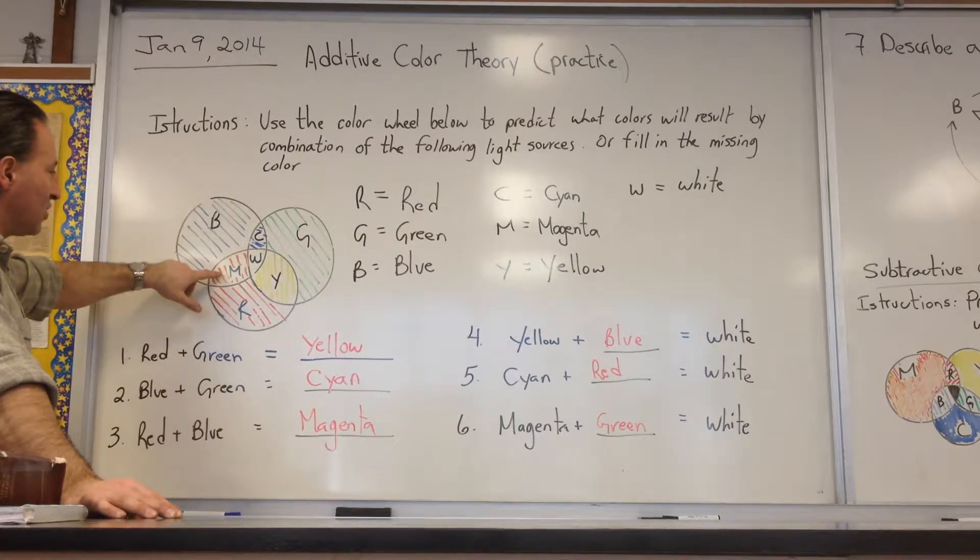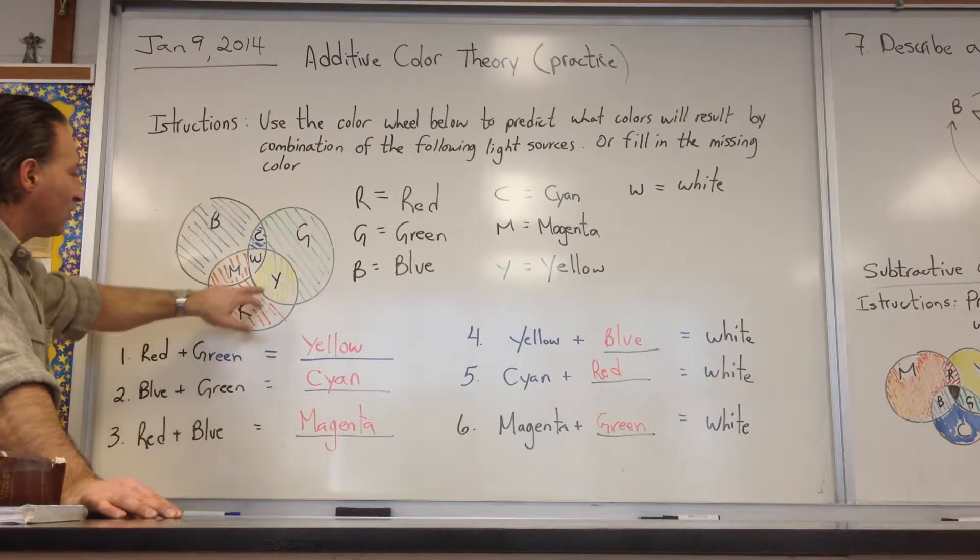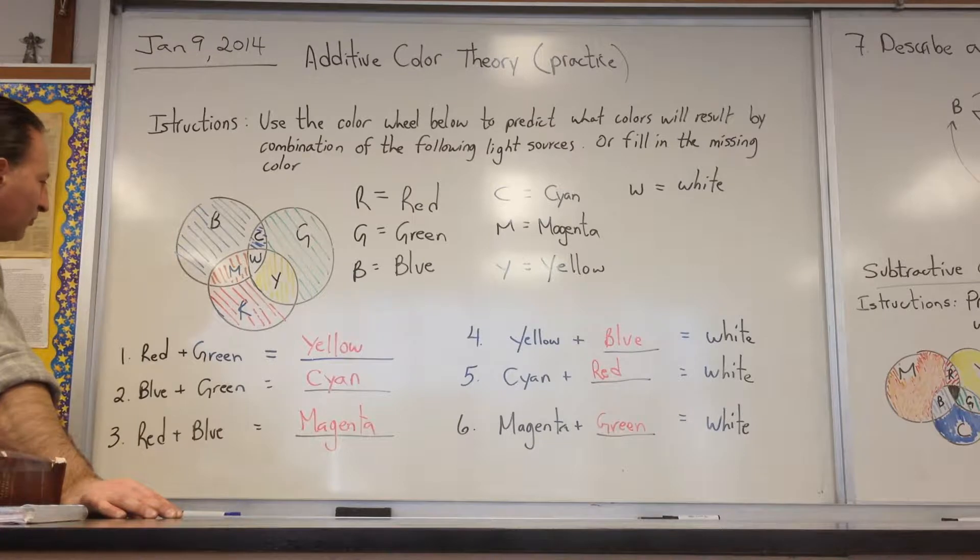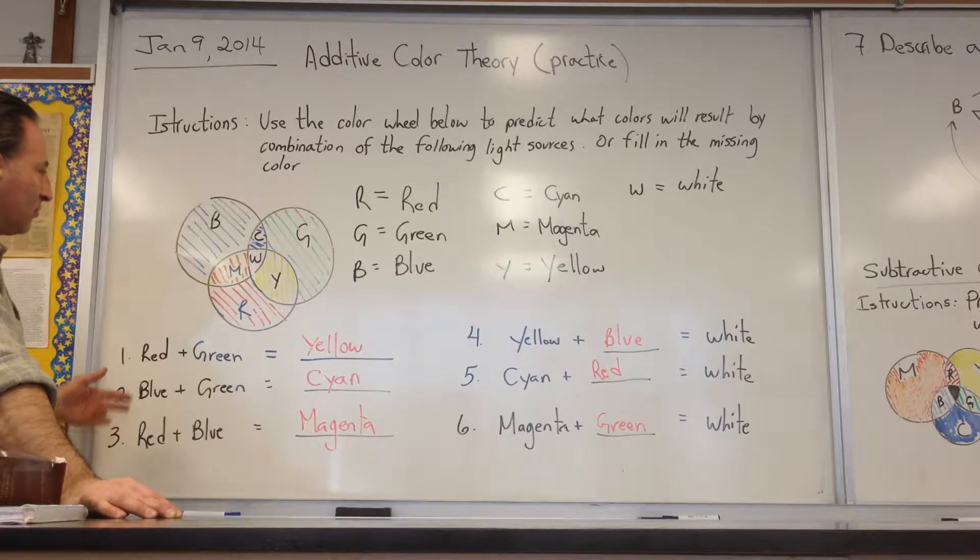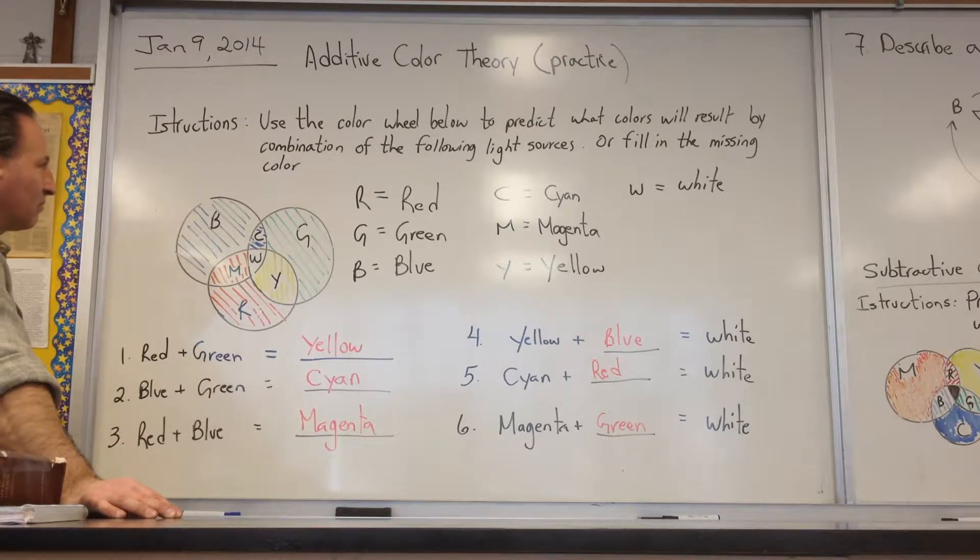Where blue and red intersect, we get magenta. Where green and red intersect, we get yellow. This allows us to predict what colors will be formed when we mix those three different basic colors.